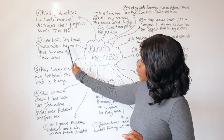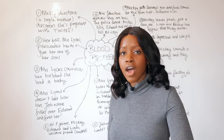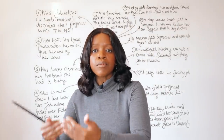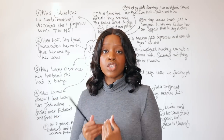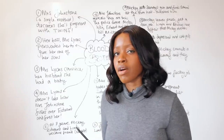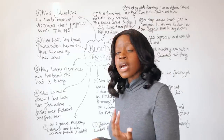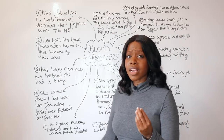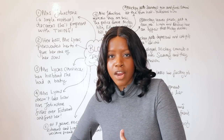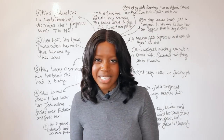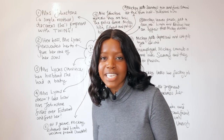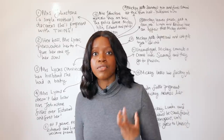Mrs. Johnstone, struggling and not knowing what to do, is persuaded and gives one of her sons to Mrs. Lyons, keeping the other herself. Mrs. Lyons raises Edward while Mrs. Johnstone keeps Mickey. They both promise never to let the children know they are related. Mrs. Lyons, whose husband had been travelling, schemes to make it appear she had been pregnant, and convinces her husband Mr. Lyons that they finally conceived — and he is very happy.